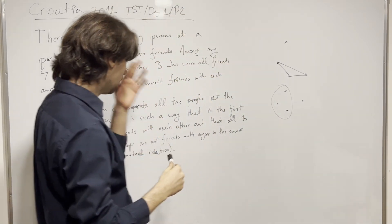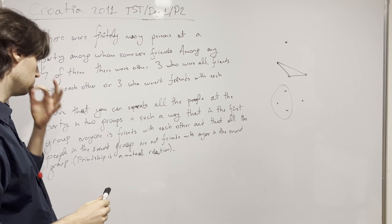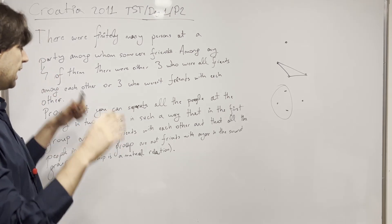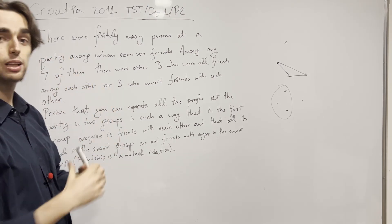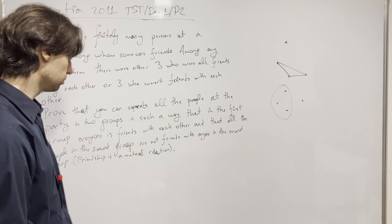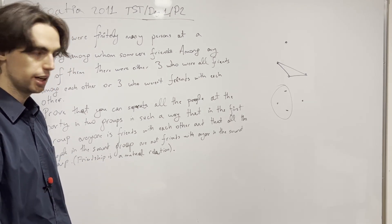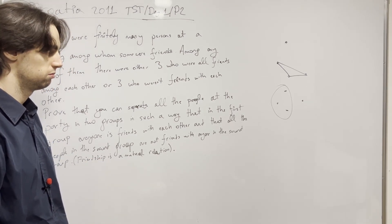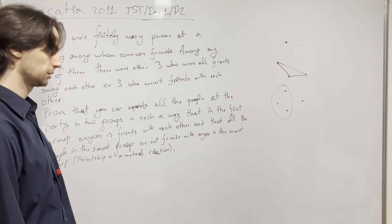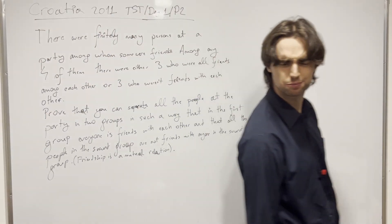Now we need to show that we can separate these people into 2 groups. In one group, everyone is friends with everyone — yay! And in the other group, nobody is friends with anybody in that group. So, how are we ever going to do this?